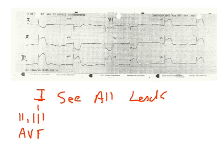The inferior leads also look at part of the posterior wall, depending on how right dominant the patient may be. The right coronary artery also feeds the SA and AV nodes.